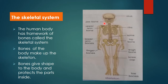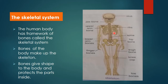Then we have jaw bones, upper arm bones, bones in the chest cavity which are called ribs, lower arm bones, bones of the spine, bones in the hip, bones in the fingers, and in the thigh region — the upper leg region — we have the thigh bone and the toe bone. All these bones collectively make the skeleton, and this skeleton makes up the skeletal system.